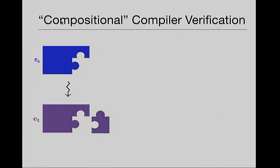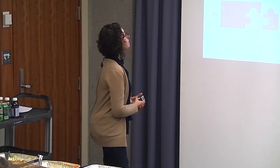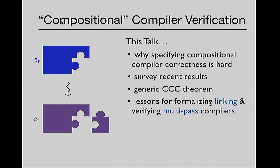This whole area — correct compilation of components, not whole programs — is called compositional compiler verification. What we want is to be able to compile a component and then link it with some target code and run that. We need to be able to talk about what correctness means in the presence of linking with some other code. What I'm going to focus on today is why specifying compositional compiler correctness is so hard — even stating what the compiler correctness theorem should be is hard and non-obvious.